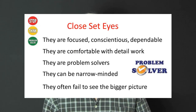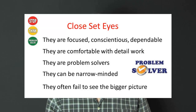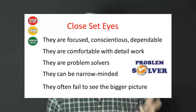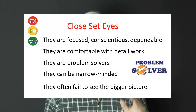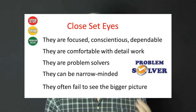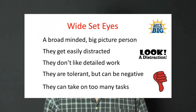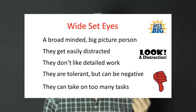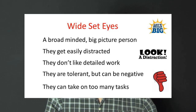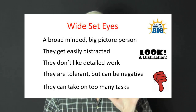Next, we'll look at closed-set eyes and wide-set eyes. With closed-set eyes, these people tend to be focused, conscientious, and dependable. They are comfortable with detailed work and are problem solvers. However, they can be narrow-minded and often fail to see the bigger picture. They are also relatively critical. With wide-set eyes, these eyes signal a broad-minded person who can see the whole picture. They do tend to get easily distracted and they don't like details. They are tolerant but can stay in a negative mindset, and are prone to taking on far too many tasks.